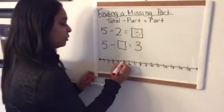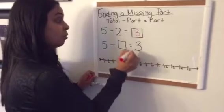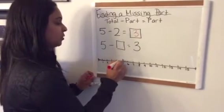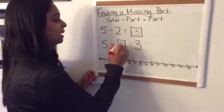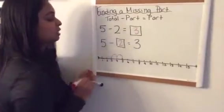So I'm going to start at five, and I'm going to start taking away until I see three. So that means take away one, take away two. I have to take away two to make three.